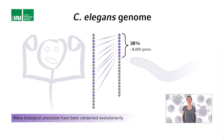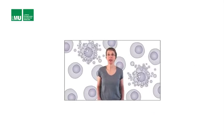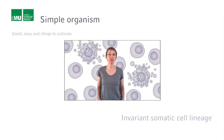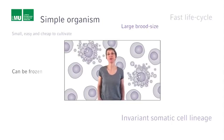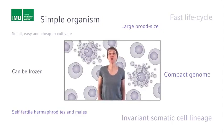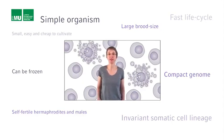In summary, C. elegans is a simple organism with a simple body plan and nervous system and an essentially invariant somatic cell lineage. It is small, easy, and cheap to cultivate. It has a large brood size, a fast life cycle, it can be frozen, it has a self-fertile hermaphrodite and male sex, and it has a compact genome. Sidney Brenner picked well. C. elegans is a great model in which to genetically dissect nervous system function, and as we will see in the next section, C. elegans also turned out to be uniquely amenable to the genetic dissection of programmed cell death, or apoptosis.